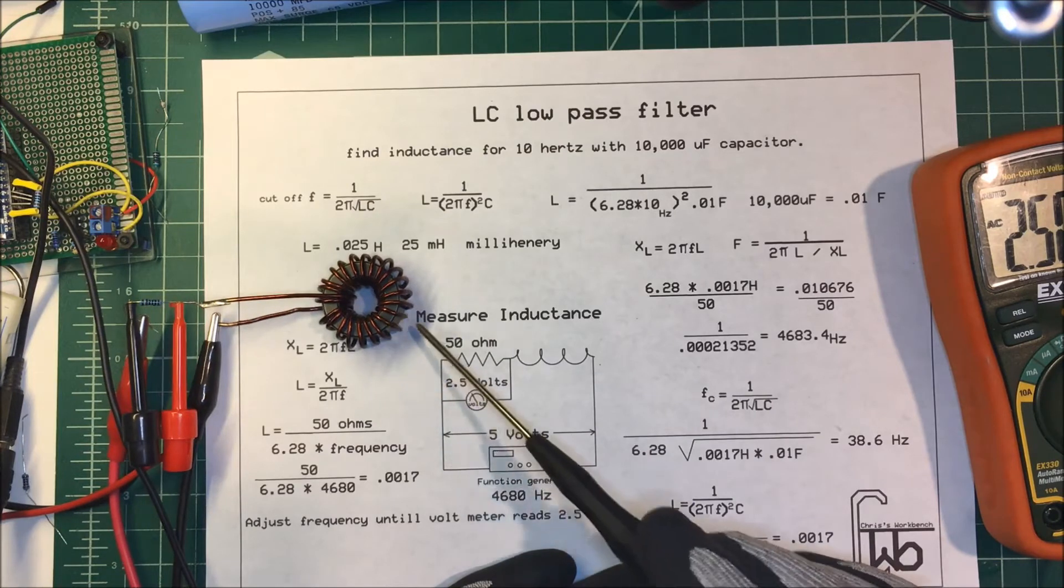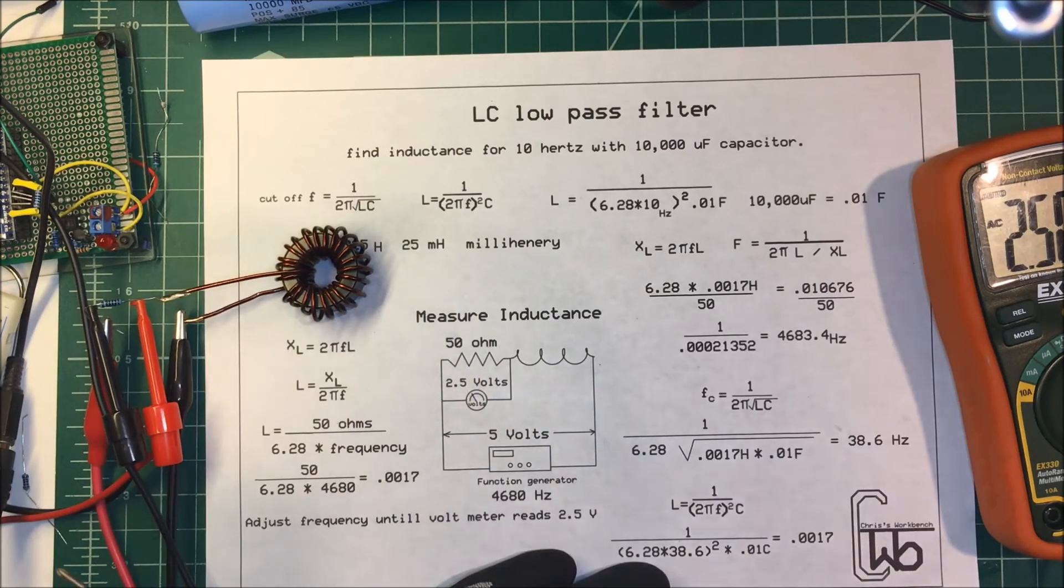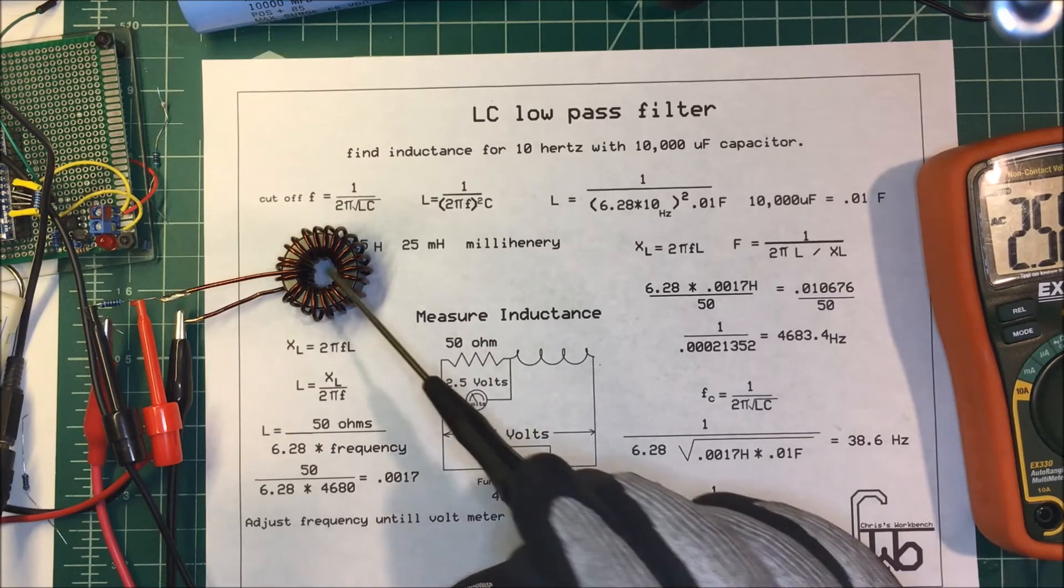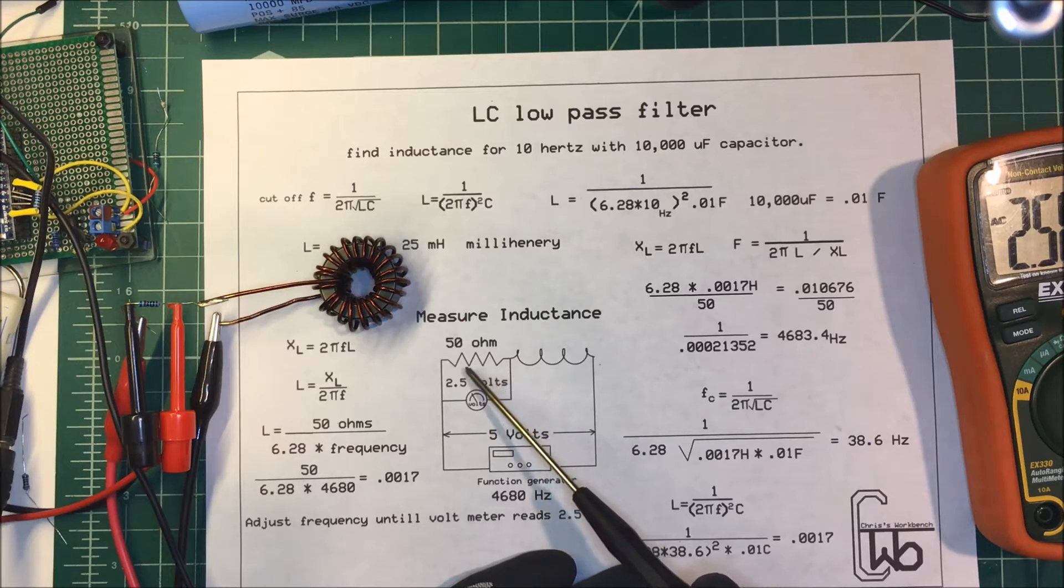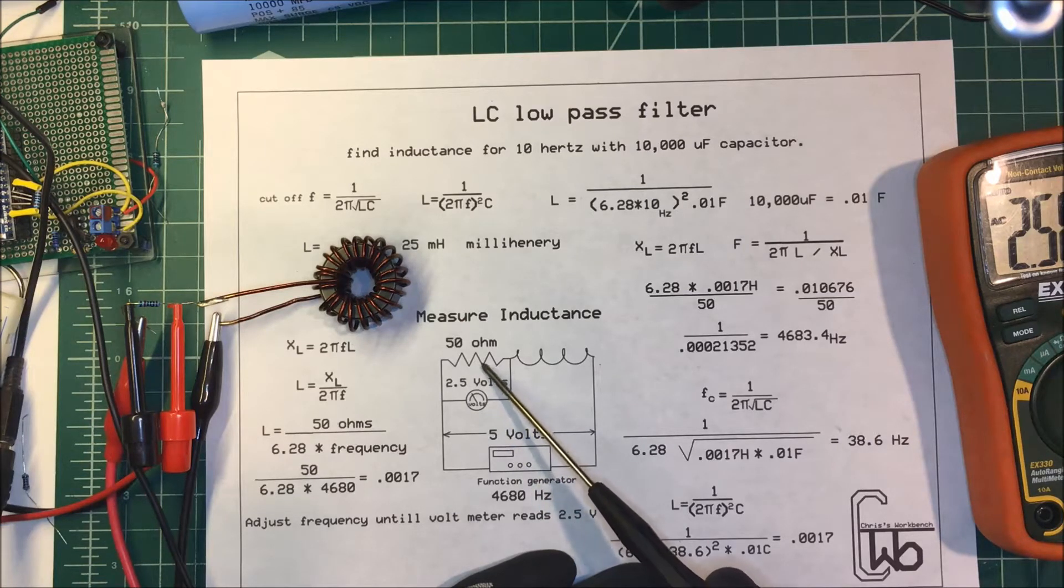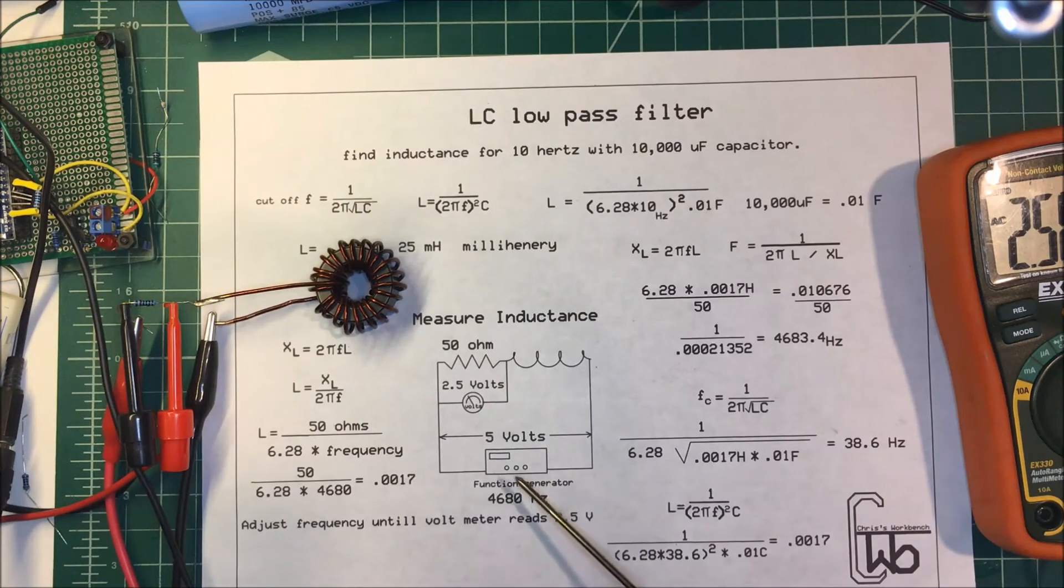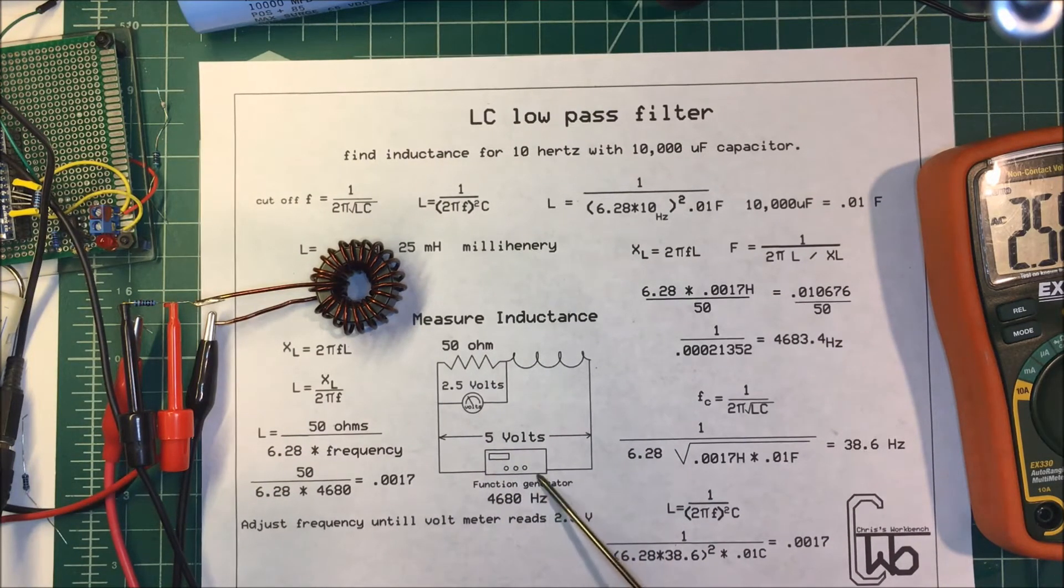We need to measure this to see what inductance we get. I hooked up this simple circuit here with a 50 ohm resistor - I used 200 ohms in parallel, also put one across here, and made sure I had 5 volts across my function generator.